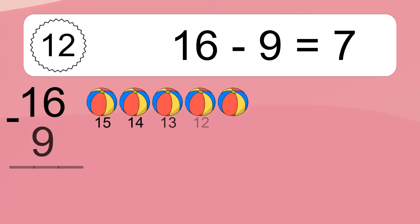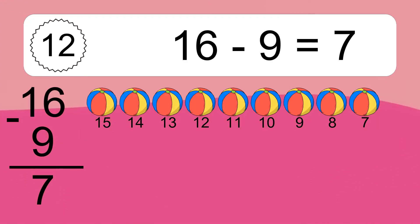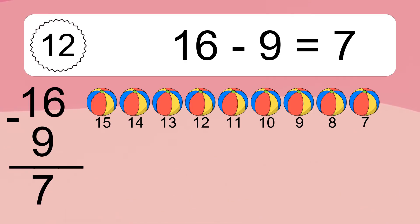16 minus 9 equals what? 16 minus 9 equals 7. Let's count it: 15, 14, 13, 12, 11, 10, 9, 8, 7.